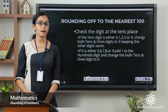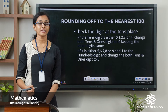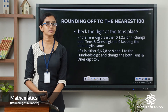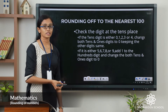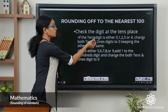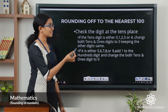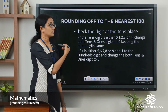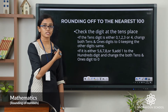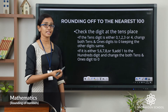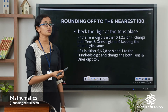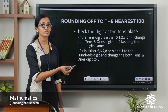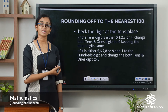Now let us see how we can round off a number to the nearest 100. It means we are changing the number to the nearest multiple of 100. If you are rounding off to the nearest 100, you have to check the digit in the tens place — that is the digit to the right of the rounding digit. If the tens digit is less than 5 — that is if it is either 0, 1, 2, 3, or 4 — you have to change both the tens and ones digits to 0 and all the other digits will remain the same.